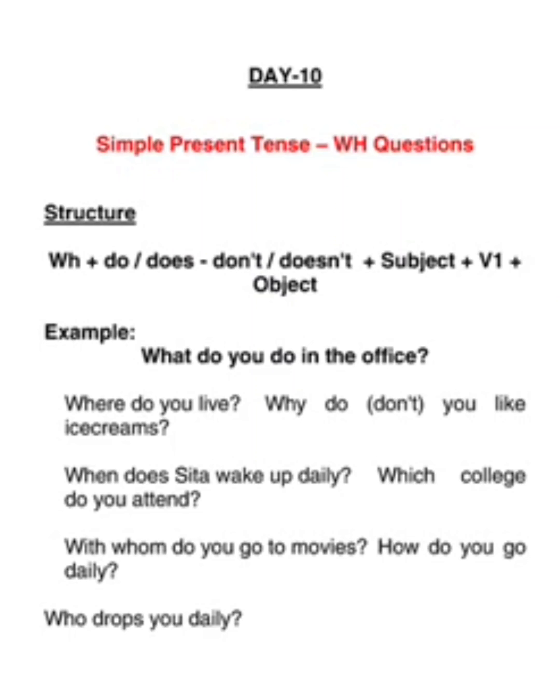Examples: What do you do in the office? Where do you live? Why don't you like ice creams? Why do you like ice creams? When does Sita wake up daily? Which college do you attend? With whom do you go to movies? How do you go daily? How also has W and H, so it becomes a WH question. Who drops you daily? These are all WH questions about regular actions, so they come under simple present tense.